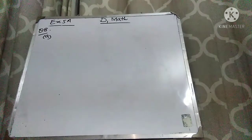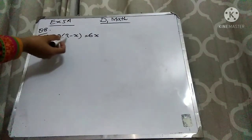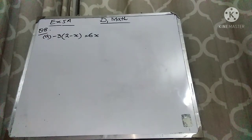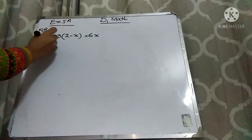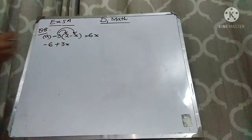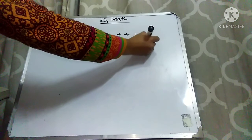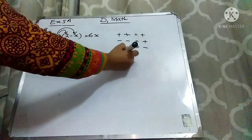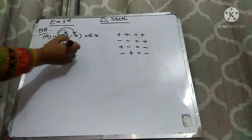Part A is: minus 3 times (2 minus x) is equal to 6x. Here you can see that 3 is multiplying with this bracket, so multiply 3 with the bracket. Whenever you do the multiplication, first multiply the signs. There is no sign, so it is a plus sign. Minus plus is minus — 3 twos are 6. Now multiply 3 with x: minus minus is plus, so you get plus 3x. So we have: minus 6 plus 3x is equal to 6x.